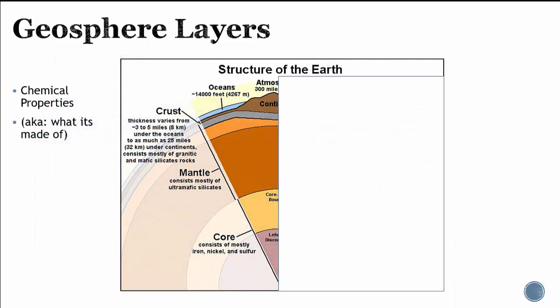If we were to split the Earth open, we could divide it one of two ways. First off, we can look at the chemical properties—in other words, what is it made out of? We have things like the crust, and technically there are two kinds of crust: oceanic crust and continental crust. Continental crust is a less dense rock that the continents are made out of. We call that granitic.